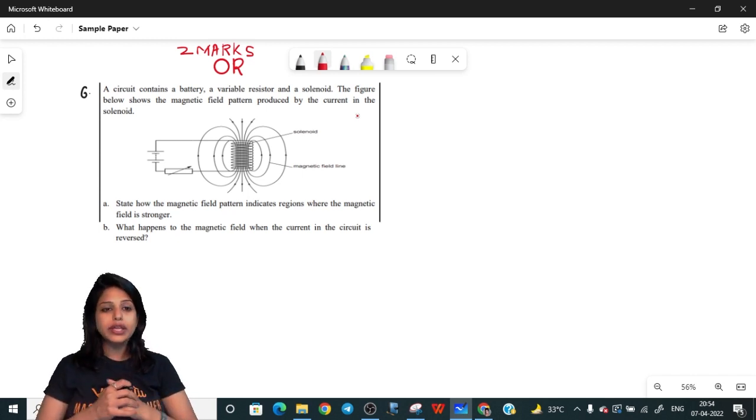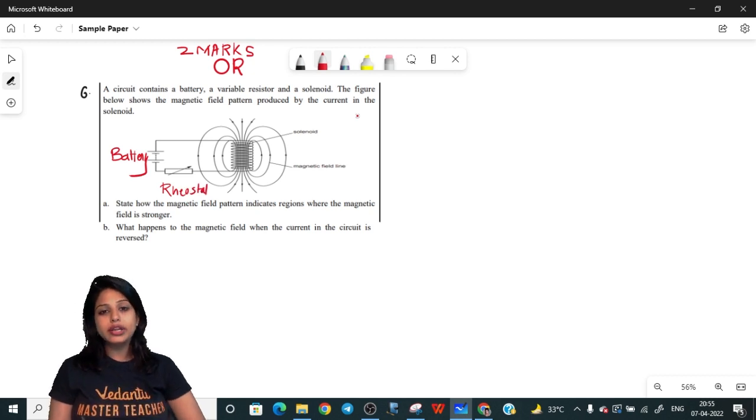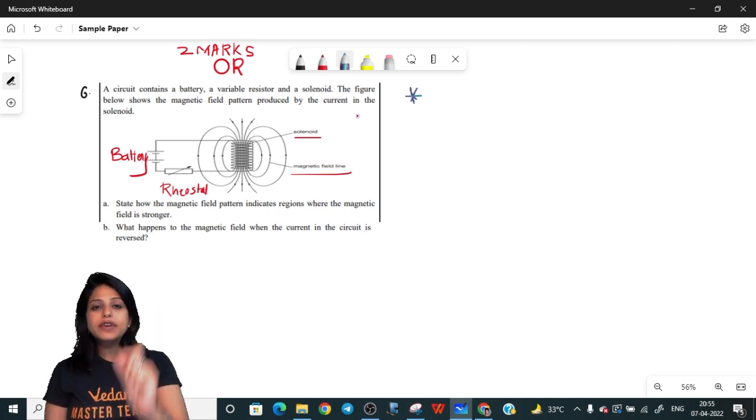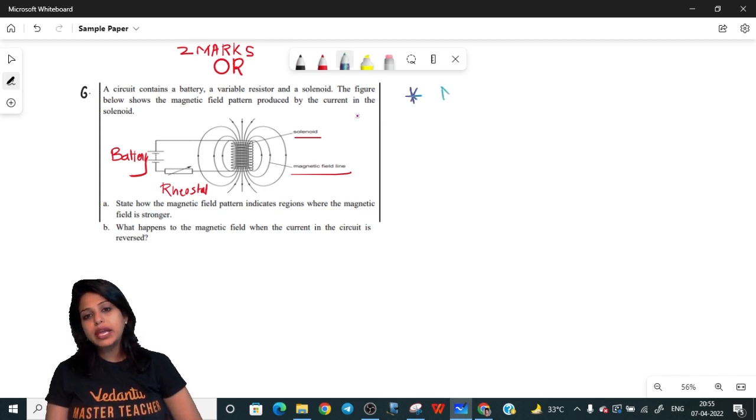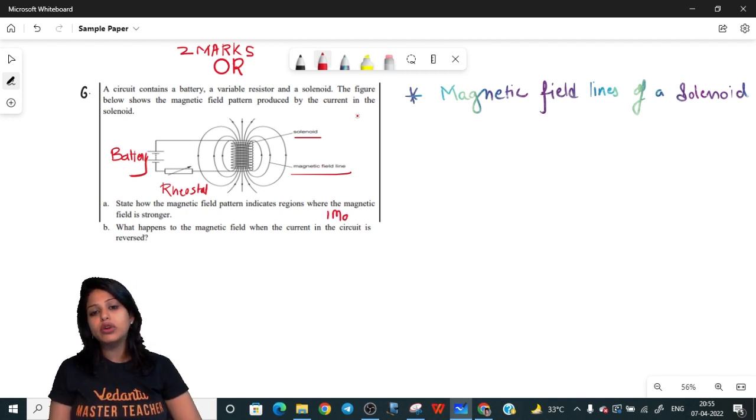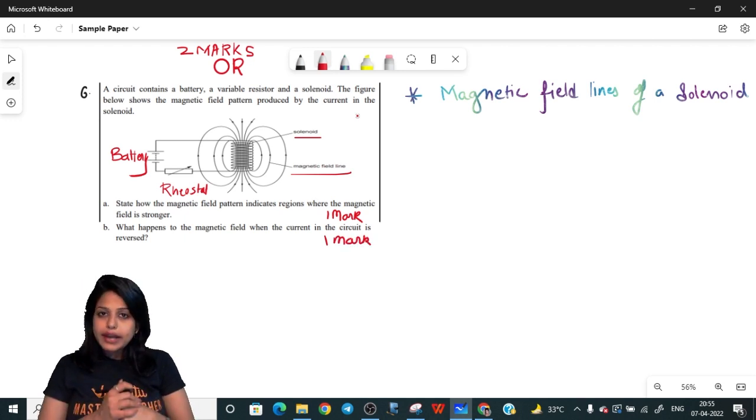There is a circuit given here. A circuit contains a battery, let me just mark this for myself. This is my battery, a variable resistor which I call as rheostat and a solenoid which is already mentioned here. The figure below shows the magnetic field pattern produced by the current in solenoid. So I already know the topic - it is from magnetic field lines of a solenoid.